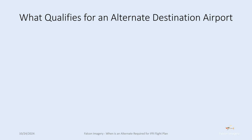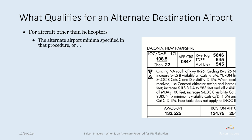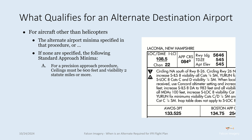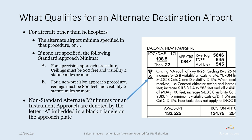So what qualifies for an alternate destination airport? For aircraft other than helicopters, the alternate airport minimum is specified in that procedure or, if none are specified, the following standard approach minima apply. For a precision approach procedure, ceilings must be 600 feet and visibility two statute miles or more. For a non-precision approach procedure, ceilings must be 800 feet and visibility two statute miles or more. Non-standard alternate minimums for instrument approaches are denoted by the letter A embedded in a black triangle on the approach plate. You can see here in this cutout we have an approach plate with an A in the triangle, indicating something different than that 600 or 800 feet, two statute miles visibility is required to list this particular instrument approach procedure as an alternate.